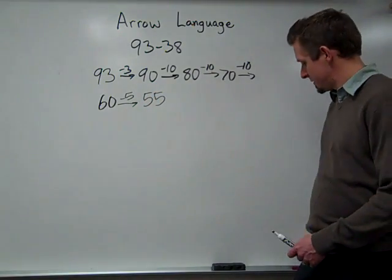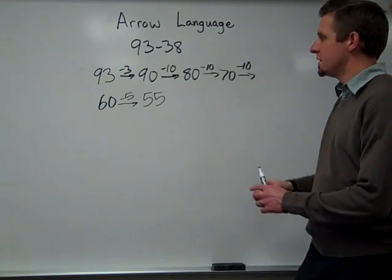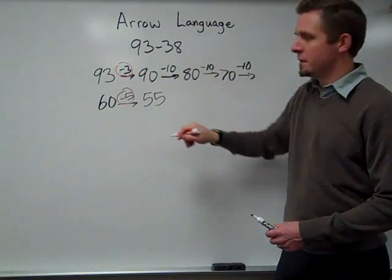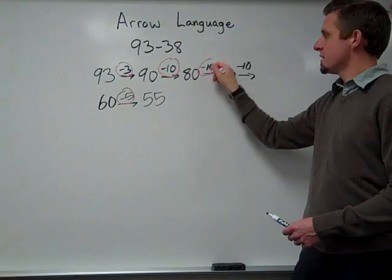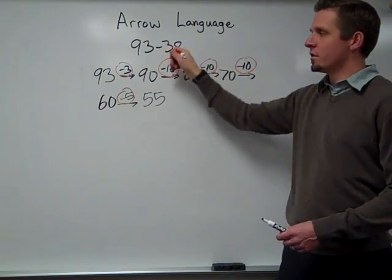So in this case, the 38 is on top of my arrows. The 3 and the 5 give me the 8 plus the 3 tens give me the 30 for the 38.